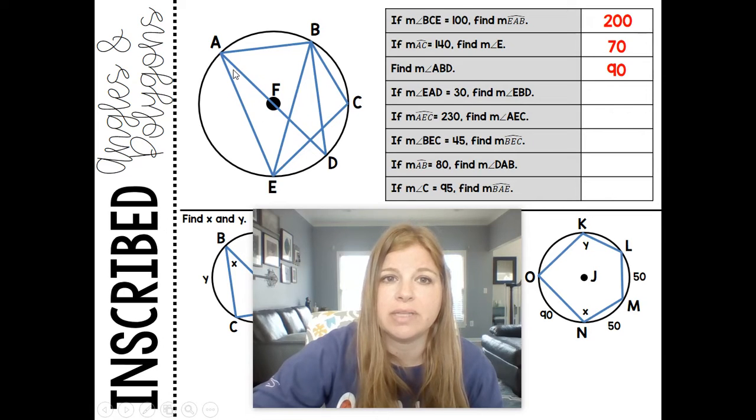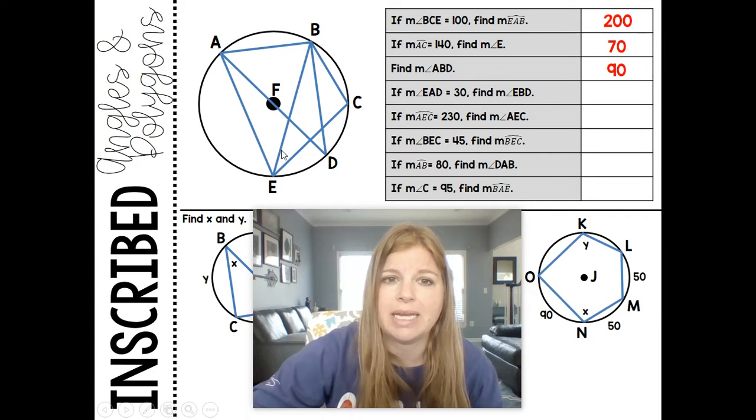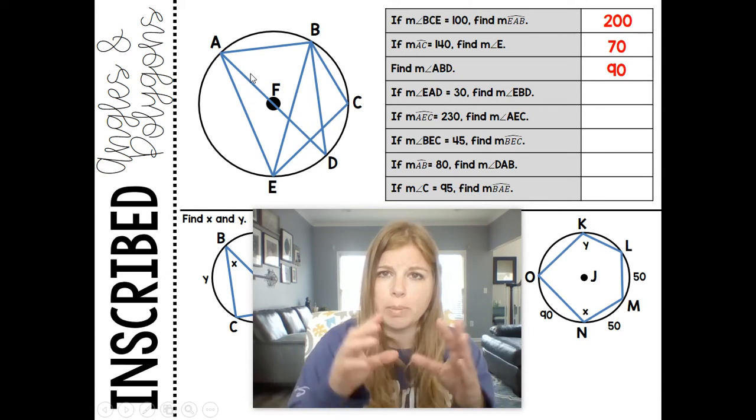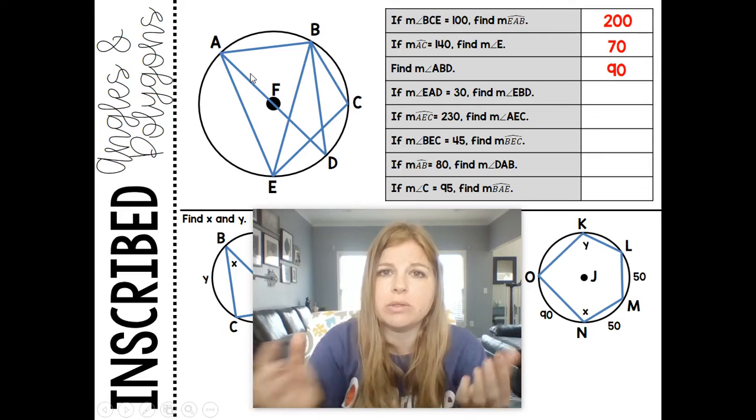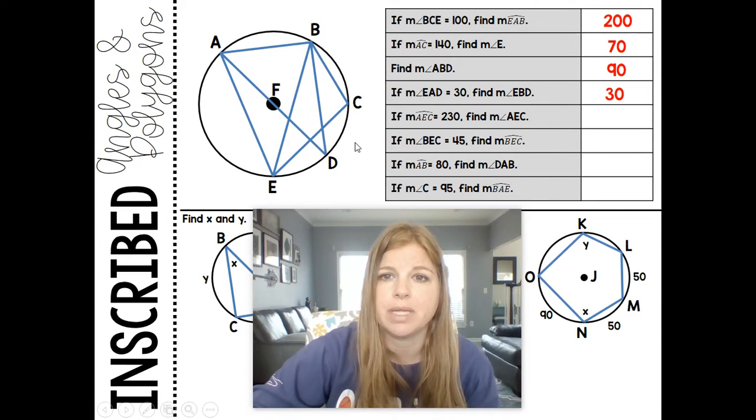If EAD, this little angle here, is 30 degrees, find EBD. If EAD is 30, and I notice EBD is also intercepting the same arc ED. EAD opens up to ED, and EBD also opens up to ED. So if this is 30, then this arc is 60, which means this inscribed angle is 30. If they open up to the exact same arc, those angle measures have to be congruent to each other.